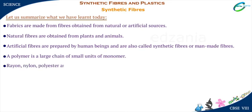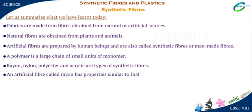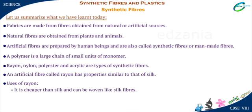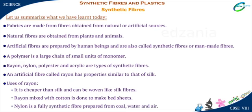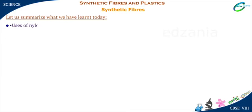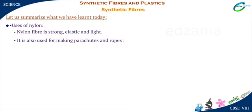Rayon, nylon, polyester and acrylic are types of synthetic fibers. An artificial fiber called rayon has properties similar to that of silk. It is cheaper than silk and can be woven like silk fibers. Rayon mixed with cotton is used to make bed sheets. Nylon is a fully synthetic fiber prepared from coal, water and air. Nylon fiber is strong, elastic and light. It is also used for making parachutes and ropes for rock climbing.